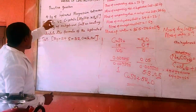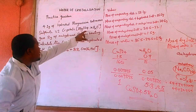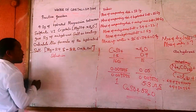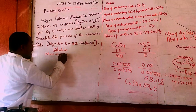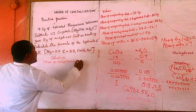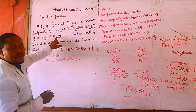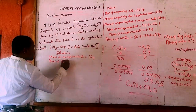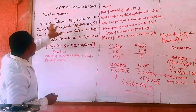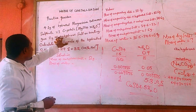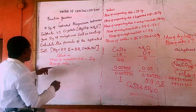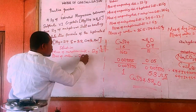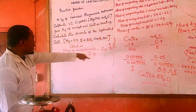Now let's solve a practice question. 4.1 grams of hydrated magnesium sulfate crystals gives 2 grams of anhydrous salt on heating. We need two pieces of information: the mass of the anhydrous (dry) salt is 2 grams. The mass of water = 4.1 − 2 = 2.1 grams.